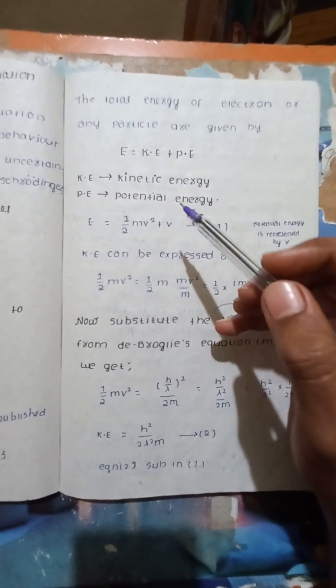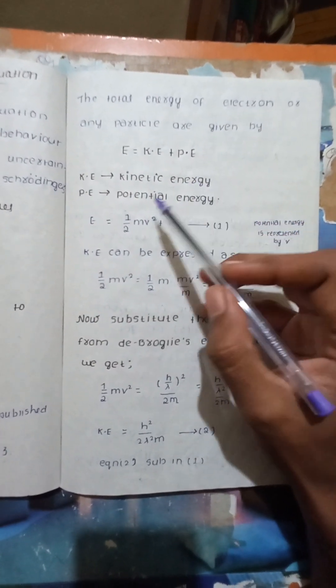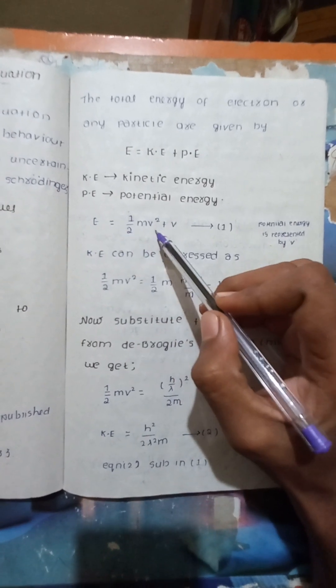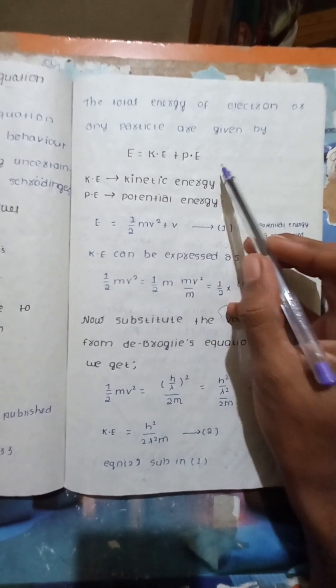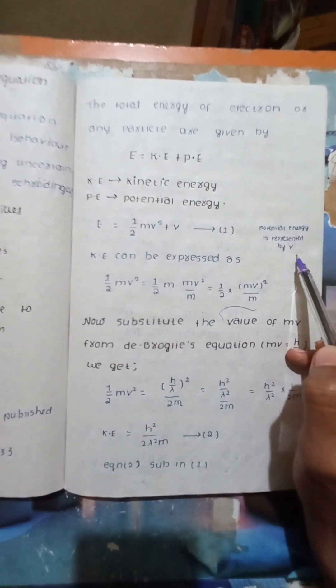The kinetic energy can be expressed as one-half mv squared. So the equation becomes: E = ½mv² + V, where V represents the potential energy.